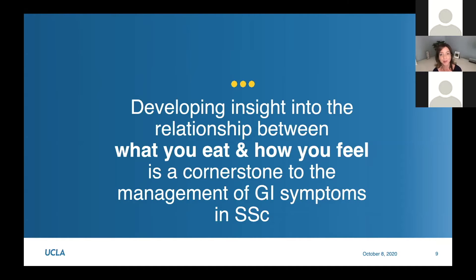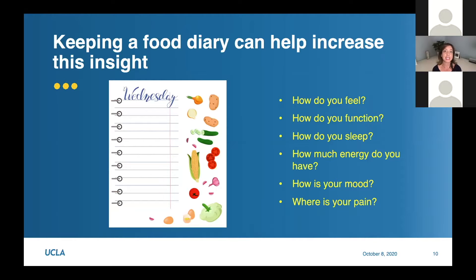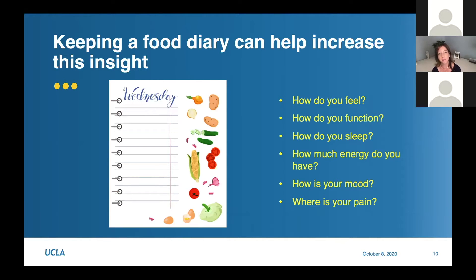One way to start developing that insight is to keep a food diary. If you haven't done it before, I'd suggest for a period of two to four weeks to write down every day every single thing that you're eating and drinking. It may sound tedious, but writing things down is really the only way you'll be able to make connections between how you feel and what you're eating. Note not only how you feel but also your sleep, energy level, mood, pain - anything relevant to your health.